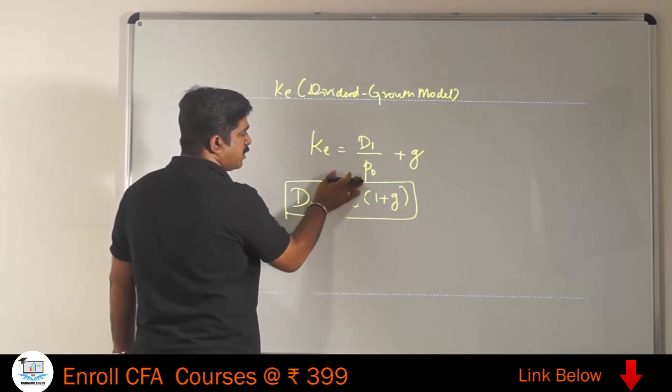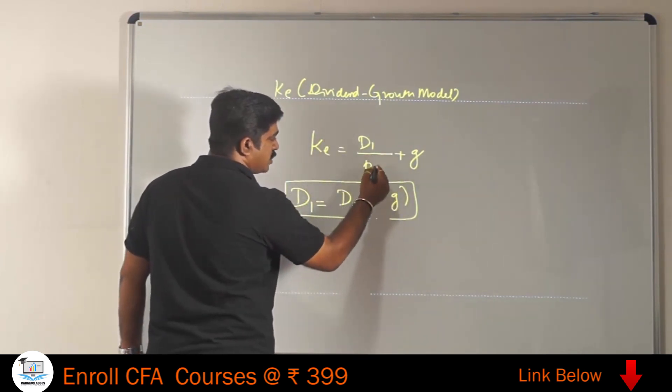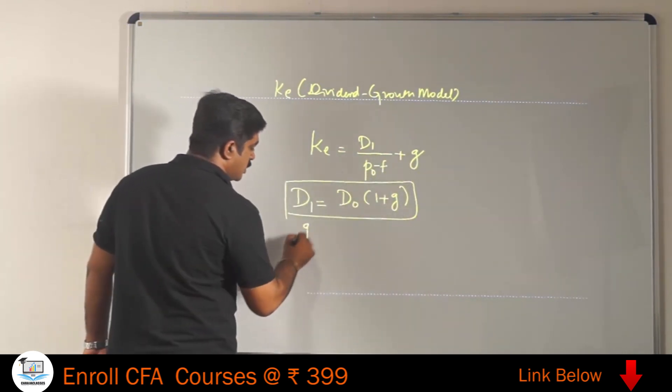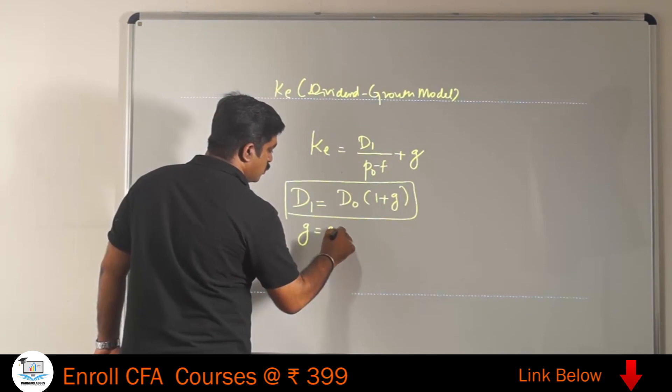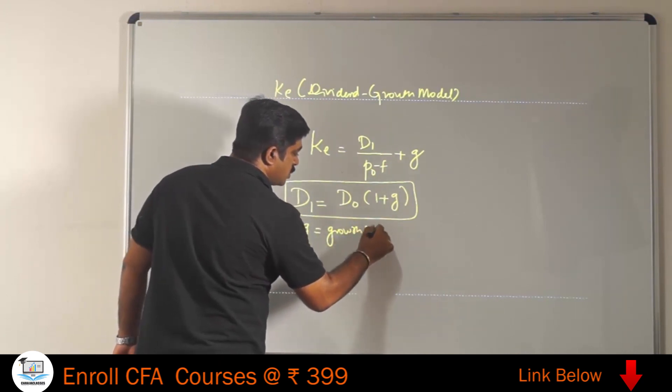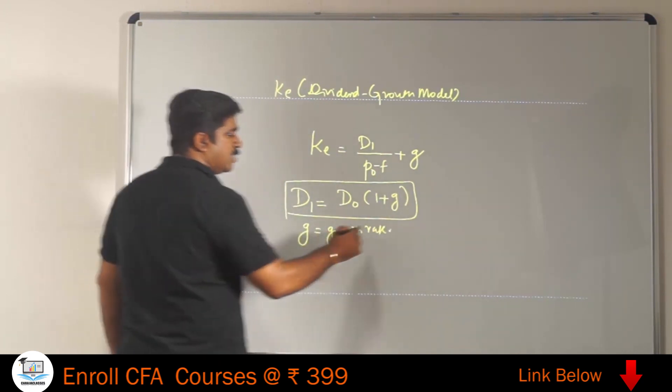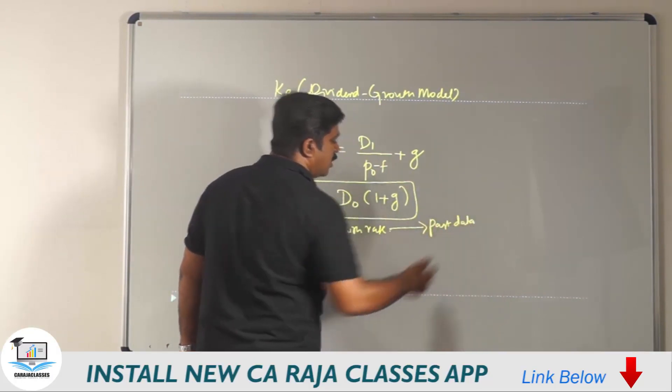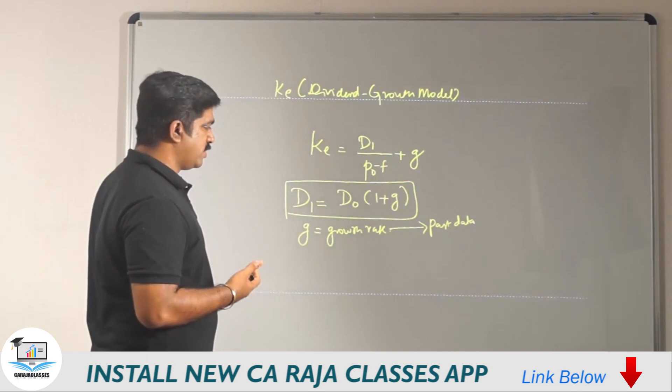That D1 has to be divided by P0. And if there is any flotation cost, that has to be subtracted. What is G? G stands for growth rate. How can this growth rate be inferred? It can be inferred by going through past data to get an idea of the extent of growth year after year.